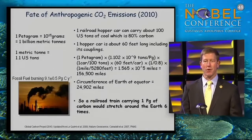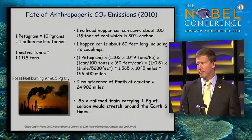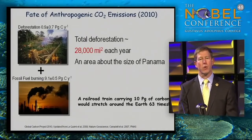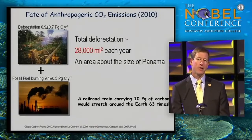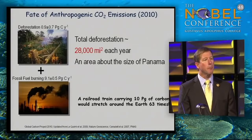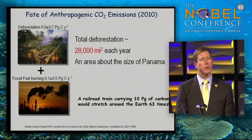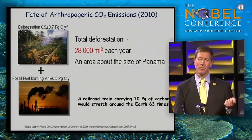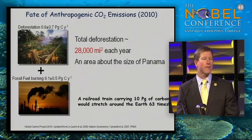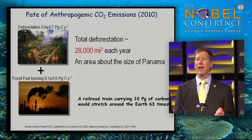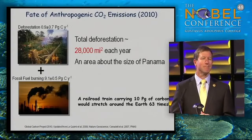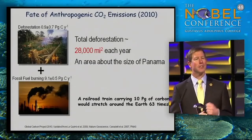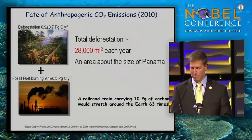We're releasing 9.1 petagrams of carbon per year from fossil fuels. Add deforestation — we're cutting down about 28,000 square miles of trees each year, almost the size of Panama — adding another 0.9 petagrams. That gives us a total in 2010 of about 10 petagrams of carbon per year. That coal train would wrap around the Earth 63 times. People say the Earth is huge, we can't be affecting it, but if you think about how much CO2 we release from almost everything we do, it really is quite staggering.